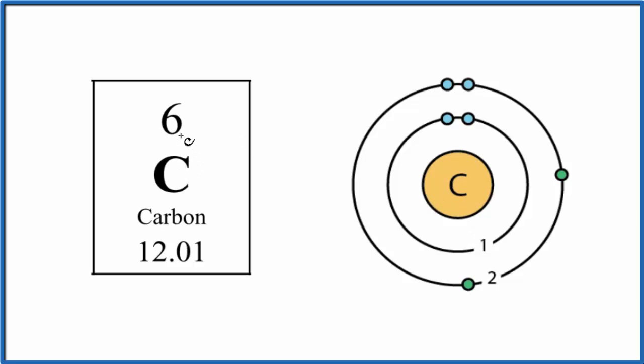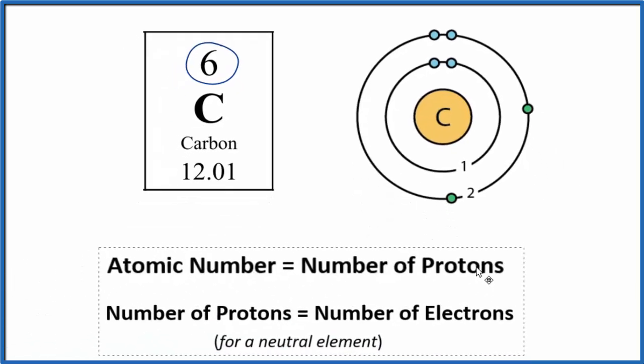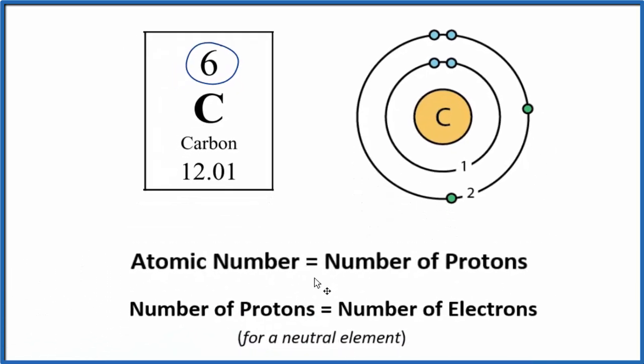First off, we note carbon on the periodic table, its atomic number is six. The atomic number, that's equal to the number of protons. So we have six protons in the nucleus here for the carbon atom.